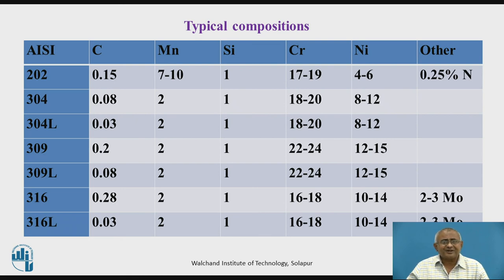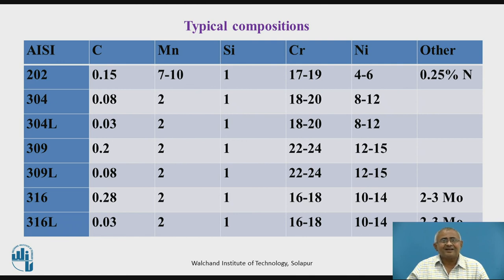We will have a look at some typical compositions of austenitic stainless steels. AISI 200 series and AISI 300 series — for example, 304 and 304L: you observe everything is the same, only carbon content is less in 304L. The 200 series will contain lesser nickel and higher manganese, while the 300 series will contain higher nickel and little manganese.